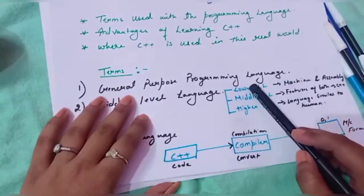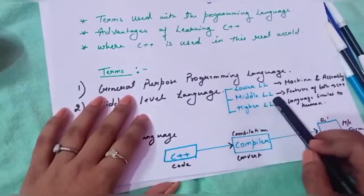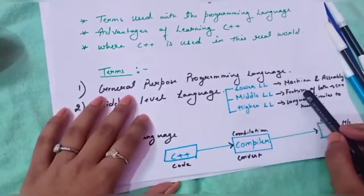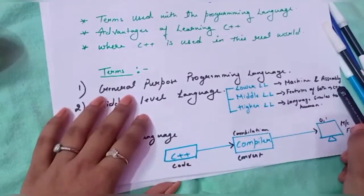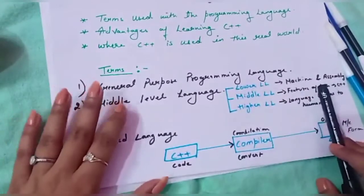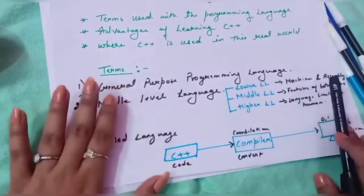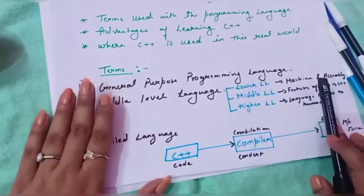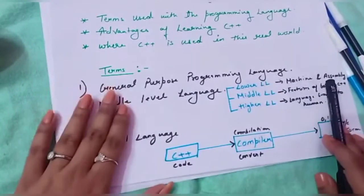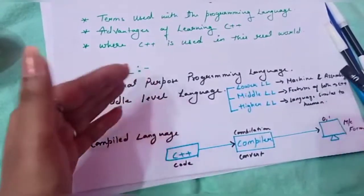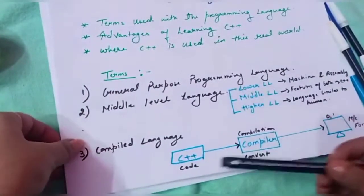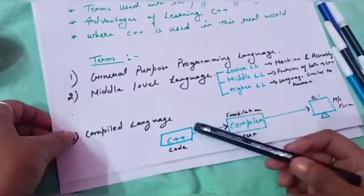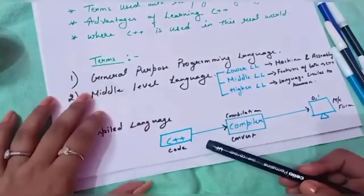Now, talking about middle level language: middle level language shares the features of both lower level language and higher level language. For example, C++. So C++ is a middle level language. Note that if a programming language belongs to any level, that does not mean it is a good or bad language — they have their own features, and C++ is a middle level language.